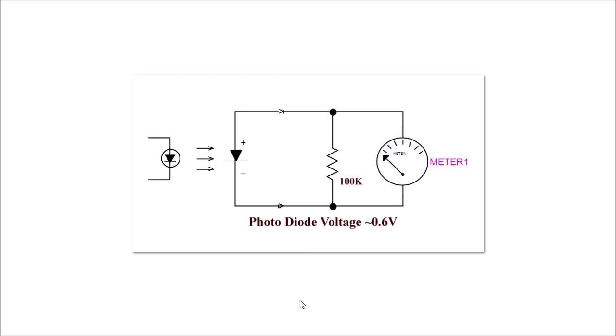Again, a brief review of photodiodes. It consists of a PN junction that is optimized to respond to light input. It generates a small low current voltage. We're talking about in the microamp region, and this would probably be 10 meg as opposed to 100K.